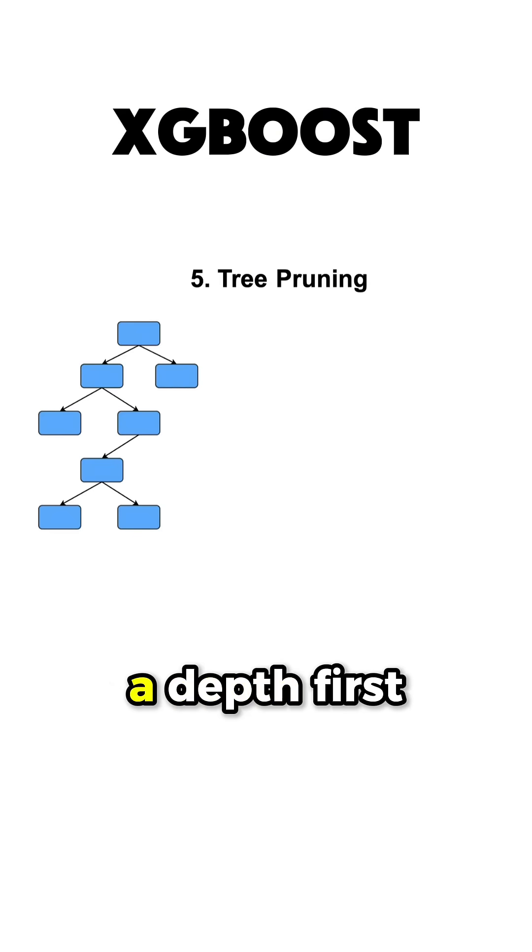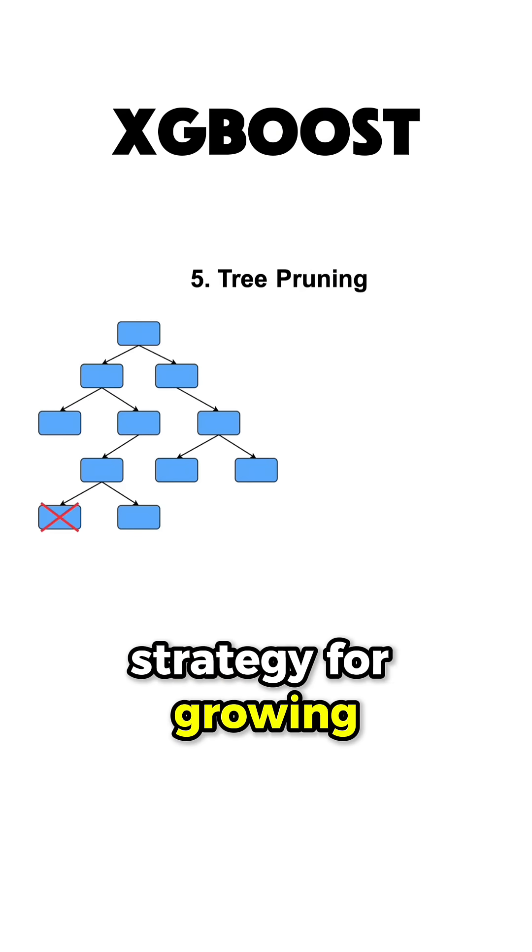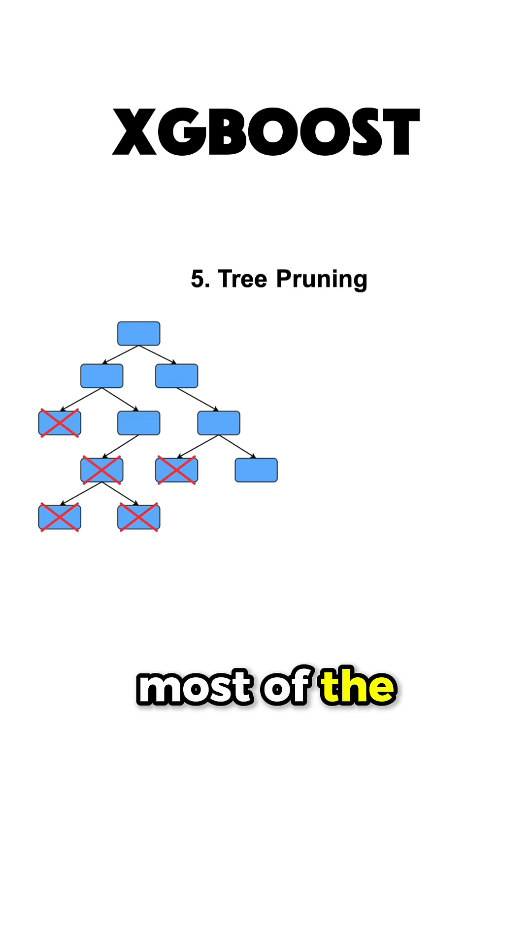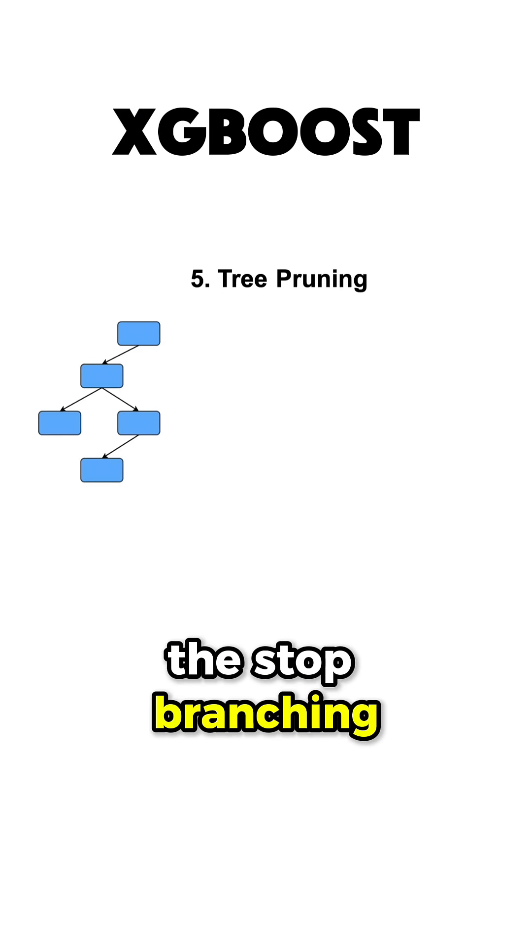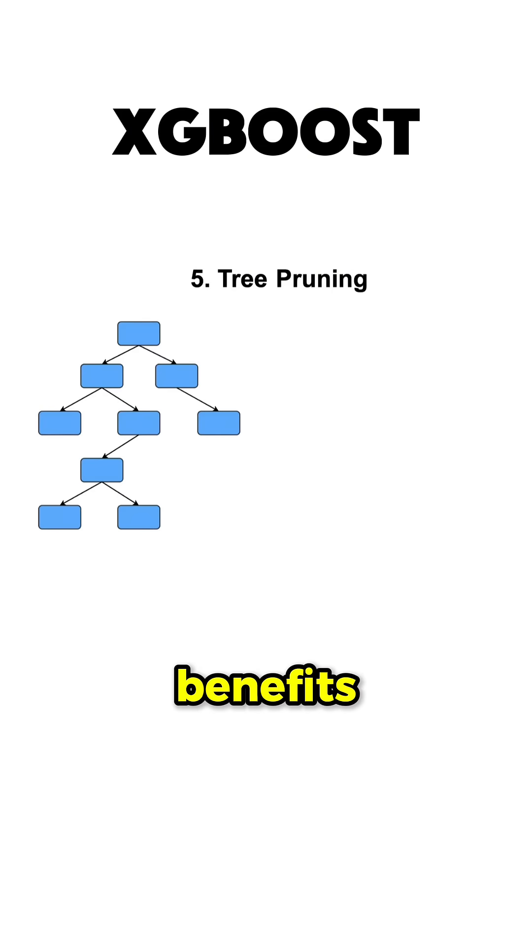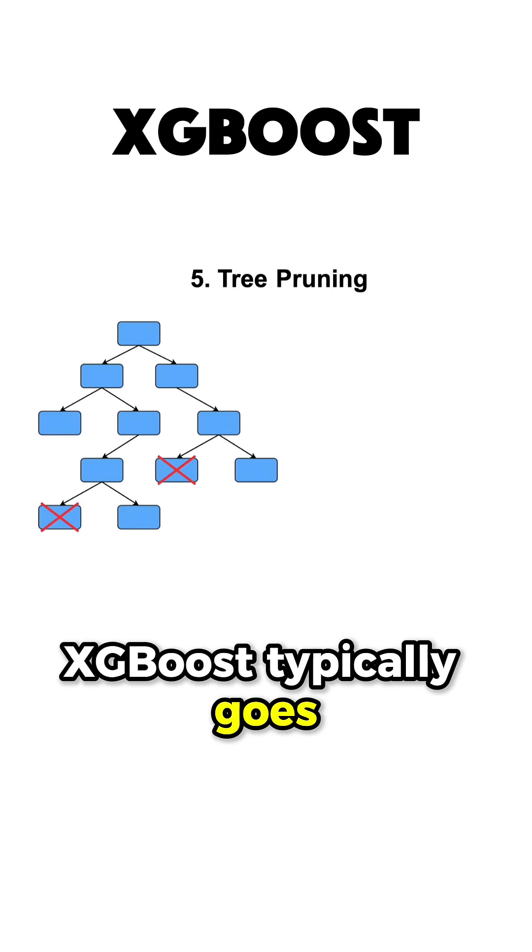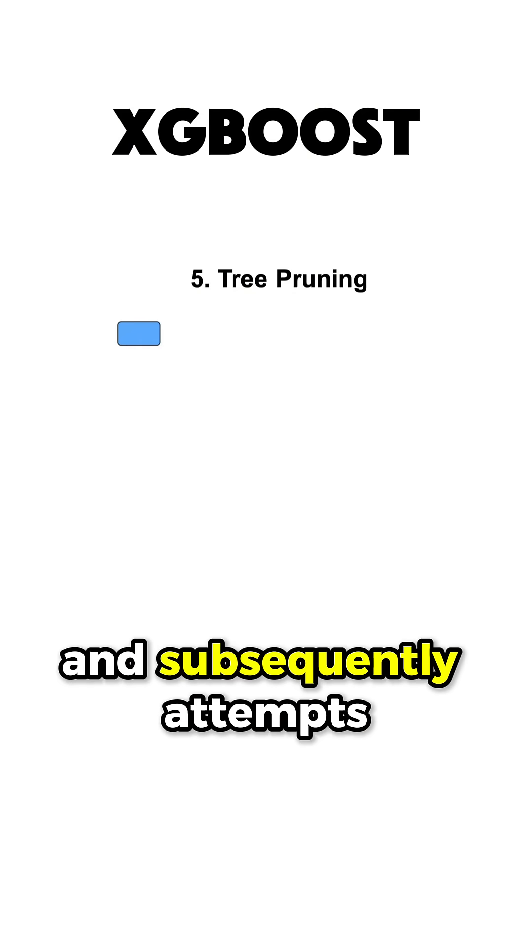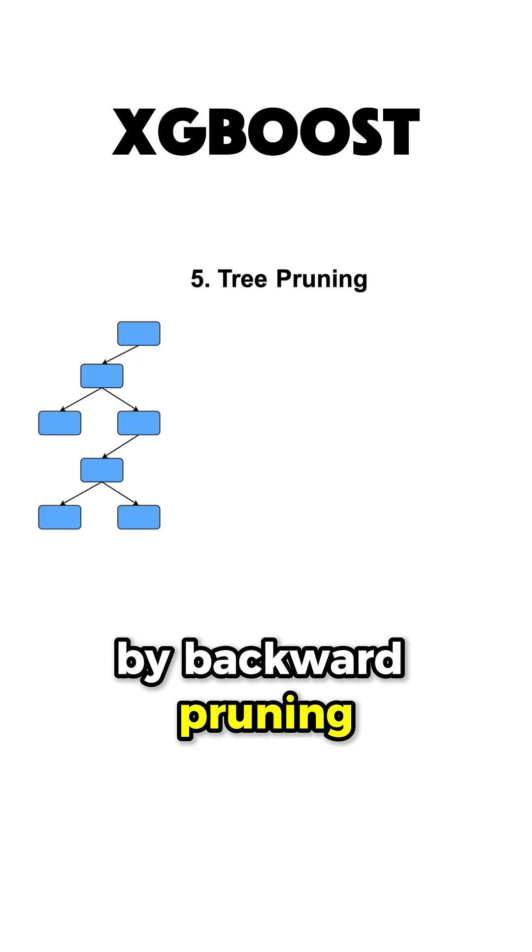XGBoost also employs a depth-first strategy for growing trees, and compared to most tree pruning methods out there that stop branching when they no longer perceive any benefits, XGBoost typically goes deep by default and subsequently attempts to optimize the tree by backward pruning. This approach often leads to trees that are deeper but more finely optimized.